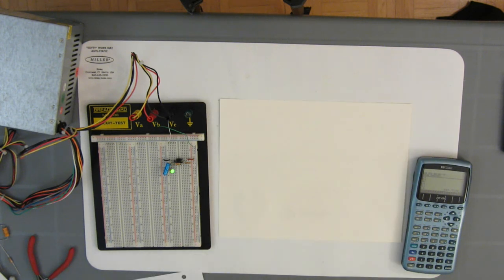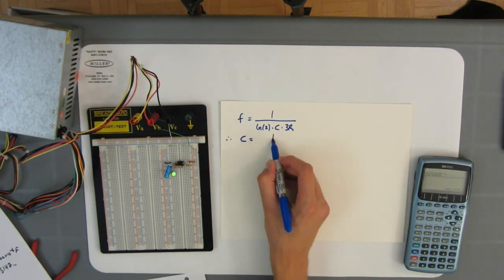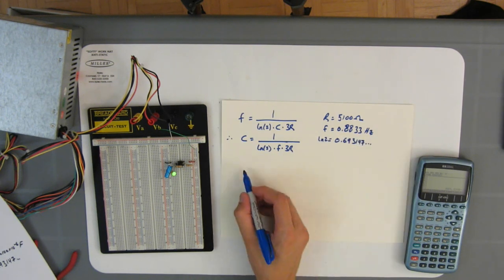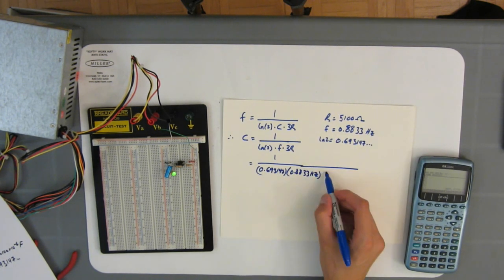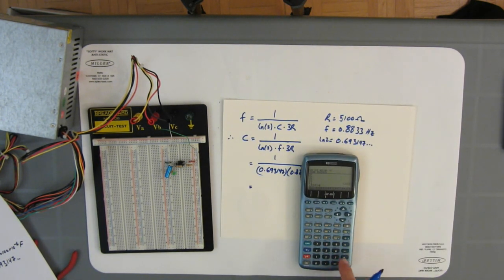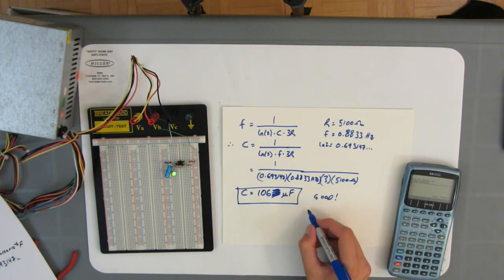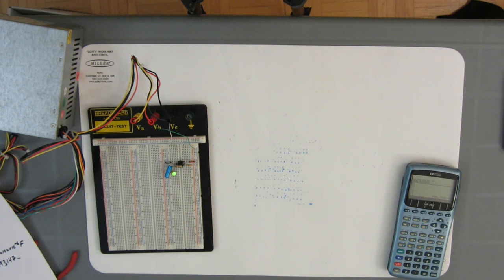Then we go back to our original formula, rearrange the variables again so that we're finding the capacitance value, or C. We plug in the numbers, 5,100 ohms, 0.883 hertz, the natural logarithm of two, and bam, 106 microfarads. Since this capacitor was rated at 100 microfarads, that's just what we're looking for.